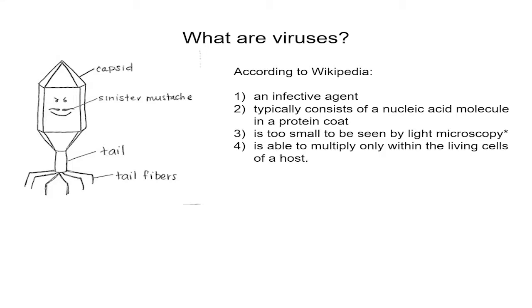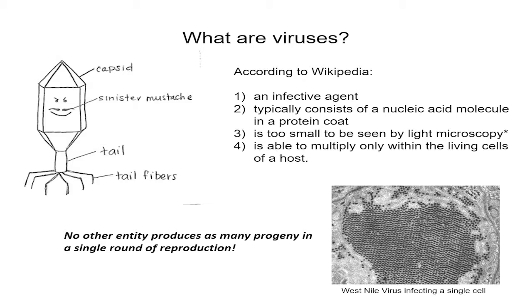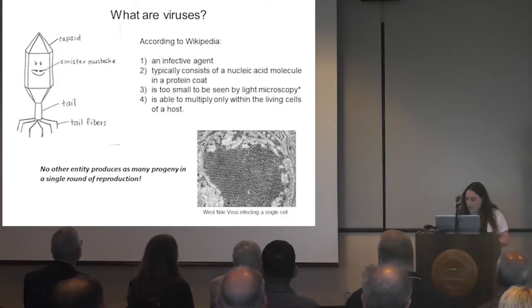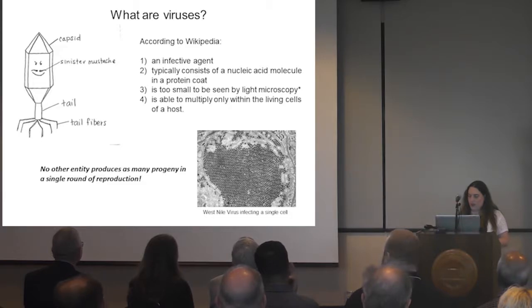One of the most stunning images I think of when I see these viral infections — this is one cell infected with West Nile virus and you can see every inch of the cell is packed with new viral particles. No other biological entity on earth makes as many progeny in a single round of infection. You can imagine how if you catch a viral infection, this could be pretty devastating. My lab tries to understand how this process occurs and how we can develop tools to alleviate these viral infections.